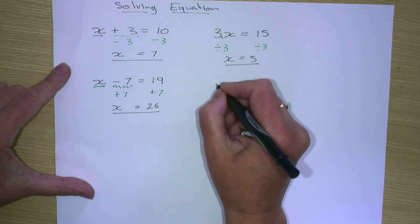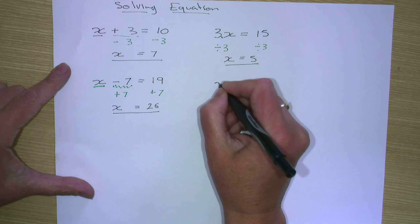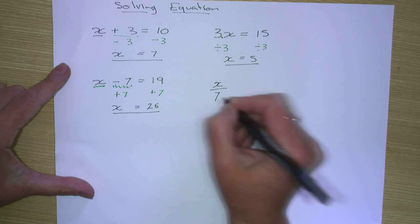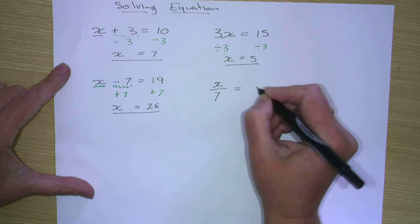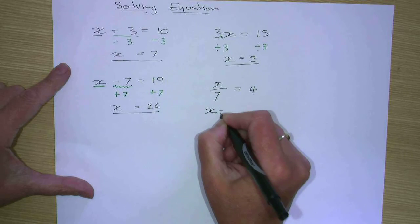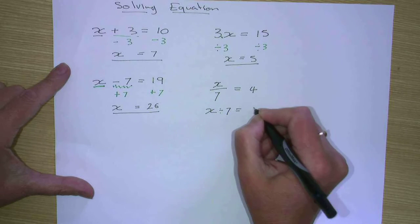Now if I have an equation that is a divide. So if I have x over 7 equals 4, it might also be written as x divided by 7 equals 4. Either way.